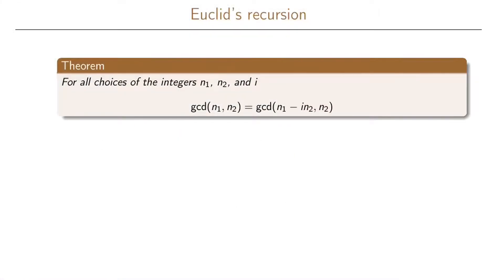The following theorem is an important theorem for greatest common divisors. The theorem says that for all choices of integers n1, n2, and i, we have the property that the greatest common divisor of n1 and n2 is the same as the greatest common divisor of n1 minus i times n2 and n2.